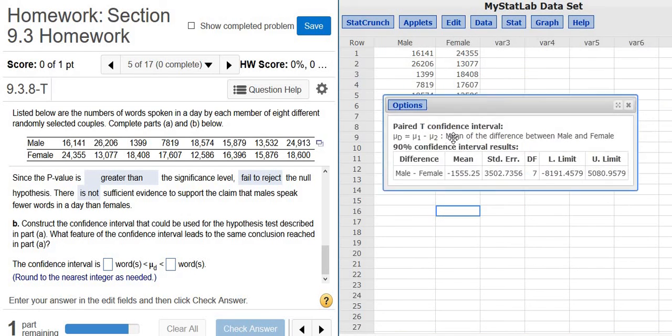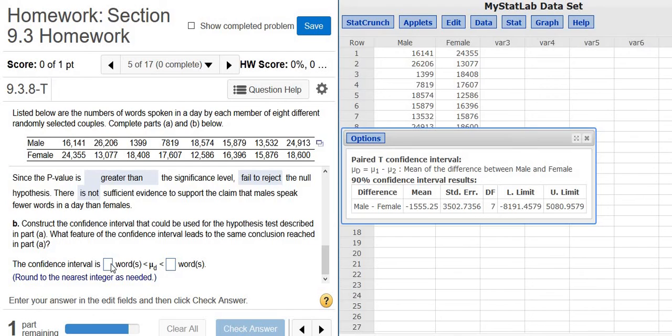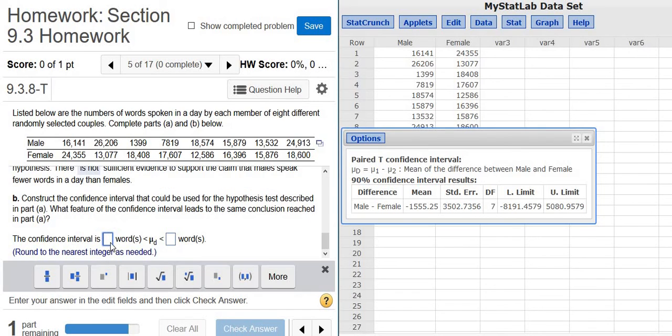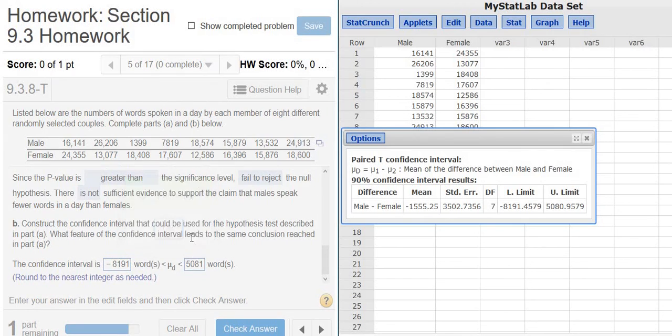So there's our answers there. So it says nearest integer, so it's going to be a whole number for us. So negative 8191 and 5081. All right, fantastic.